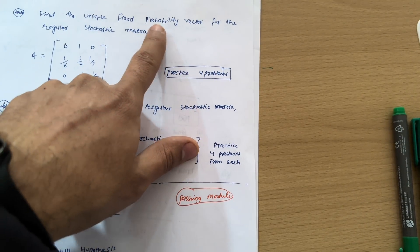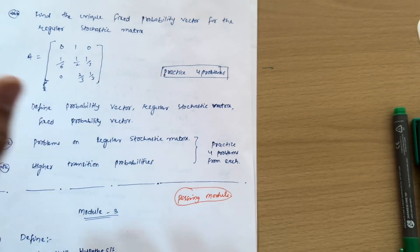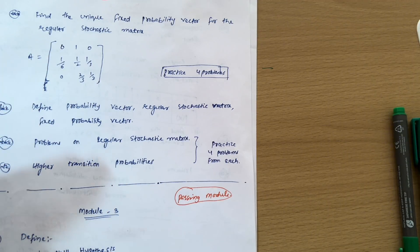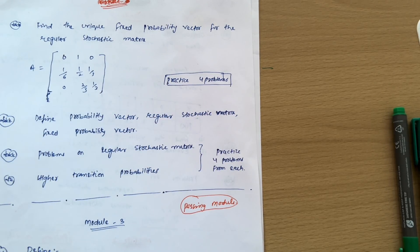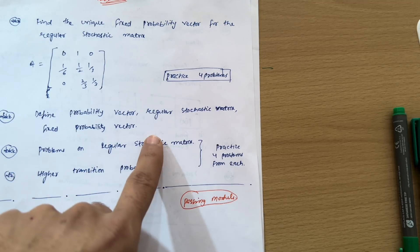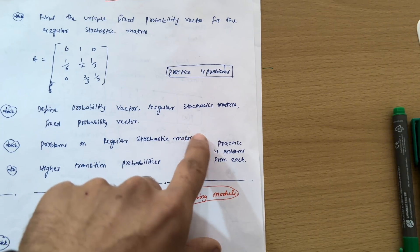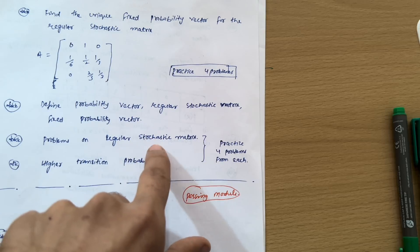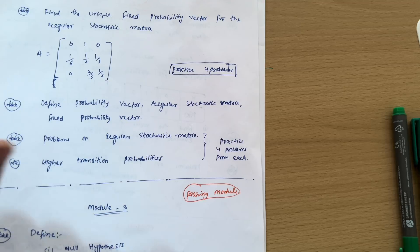Next in Module 2, we have: find the unique fixed probability vector for a regular stochastic matrix. You have to practice four problems from previous year papers. For joint probability distribution, two to three problems are enough, and for the stochastic matrix concept, go through four problems from the papers shared on my Instagram handle. Also cover: definition of probability vector, regular stochastic matrix and fixed probability vector (theoretical portion), and problems on regular stochastic matrix and higher transition probabilities — four problems each. This module is a full passing module where you should aim for at least 15 to 16 marks.